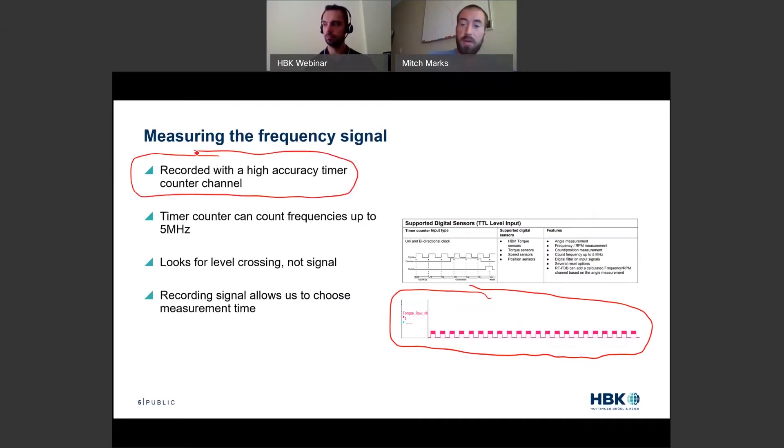In order to measure the frequency signal, we need to understand it a little bit. In this graph on the bottom here, we have this pulse train - a digital representation of that square wave coming out of the torque sensor. We can see that we have a pulse train with a frequency. This is actually a recording of the frequency output of the torque sensor. We record this signal with a high accuracy timer counter channel. That timer counter can measure up to 5 megahertz, so the 60 kilohertz isn't even scraping the surface. It's looking for rising edges. We're not looking at signal, we're looking at rising edges because it's digital. By recording this measurement period, this allows us to choose our measurement time. This is just a snippet from our data sheet about that timer counter channel and what it can be used for.